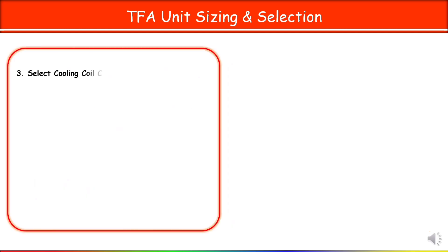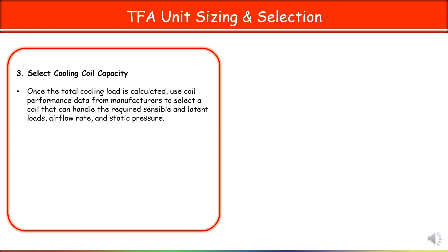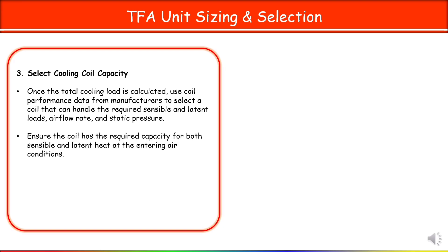Once you have calculated the sensible and latent heat loads, you have the total load. Use the coil performance data from manufacturers to select a coil that can handle the required sensible and latent heat at the entering air condition, along with the required air flow rate and static pressure.